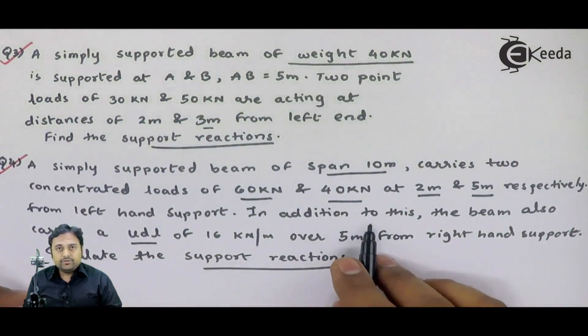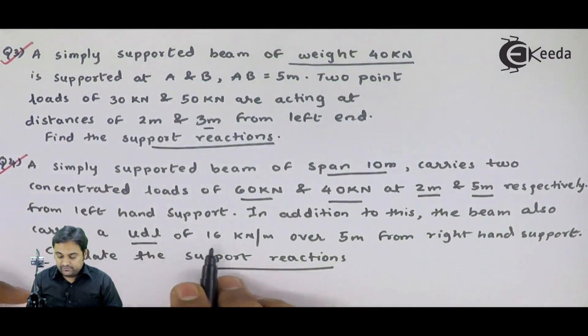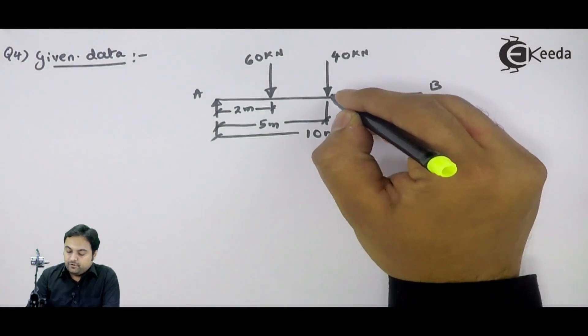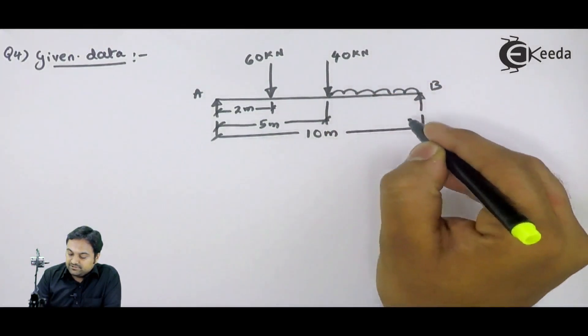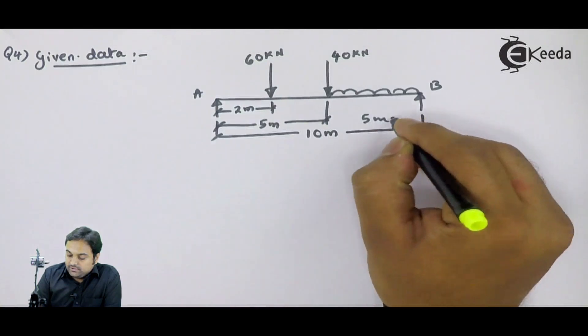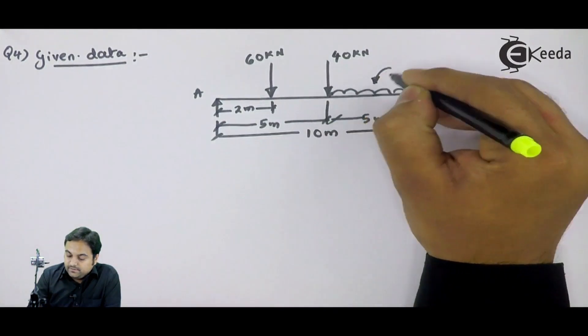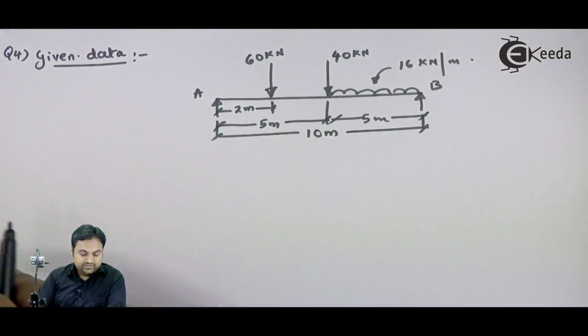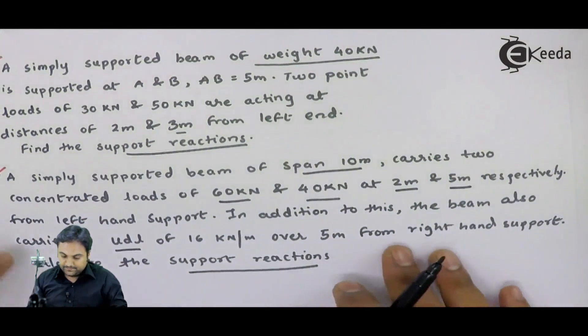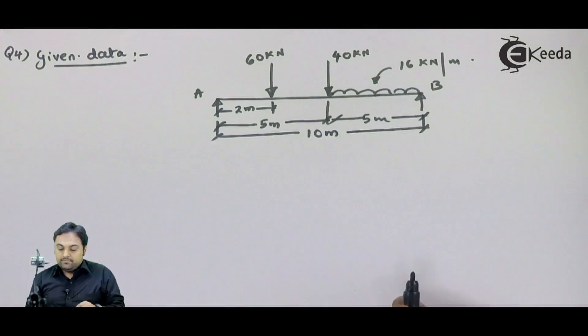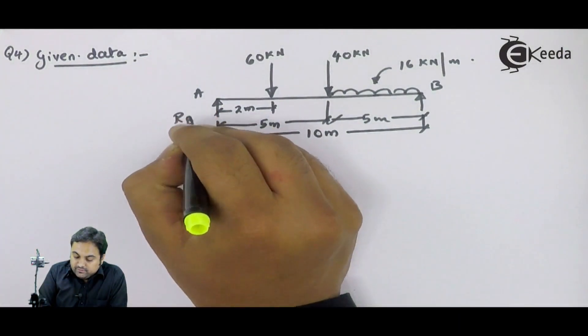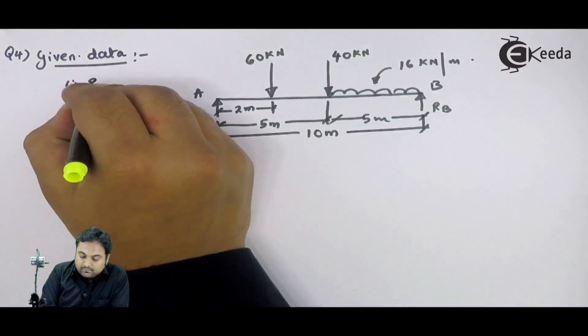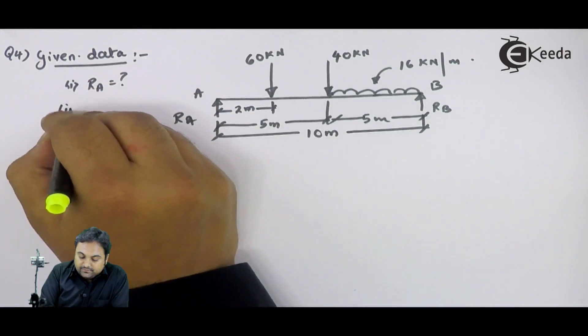Then in addition to this, the beam also carries a UDL of 16 kilonewton per meter over 5 meters from right-hand support. From the right-hand support, if you take 5 meters distance, over that distance there is a UDL of 16 kilonewton per meter. This much is the question given and here they are telling us to calculate the support reactions. Because at point A and at point B there would be reactions and these values we have to calculate.